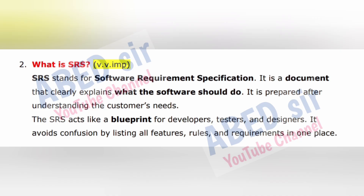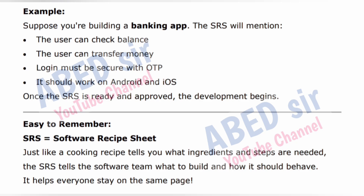Next important question: What is SRS? SRS stands for Software Requirement Specification. It is a document that clearly explains what the software should do. It is prepared after understanding the customer's needs. The SRS acts like a blueprint for developers, testers, and designers. It avoids confusion by listing all features, rules, and requirements in one place. Example: suppose you are building a banking app — the SRS will mention: the user can check balance, the user can transfer money, login must be secure with OTP, and it should work on Android and iOS. Once the SRS is ready and approved, the development begins. Easy to remember: SRS equals 'Software Recipe Sheet.'